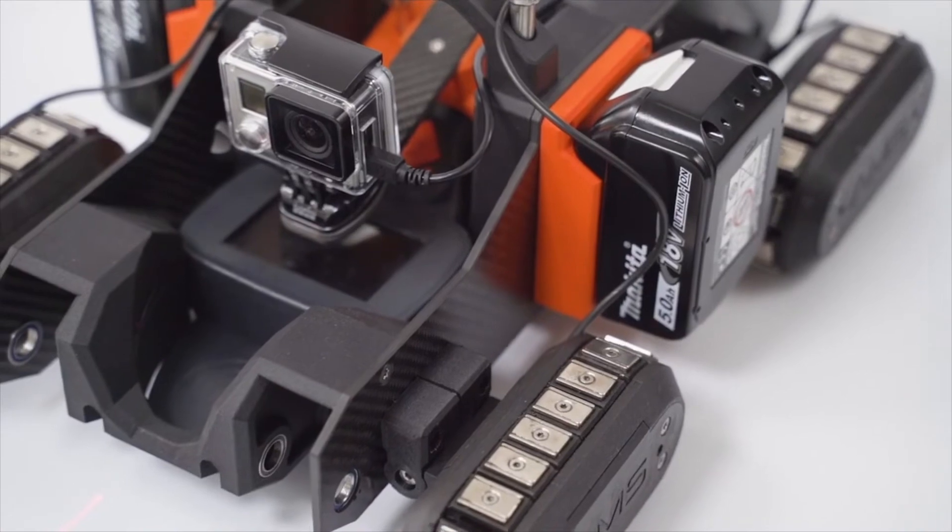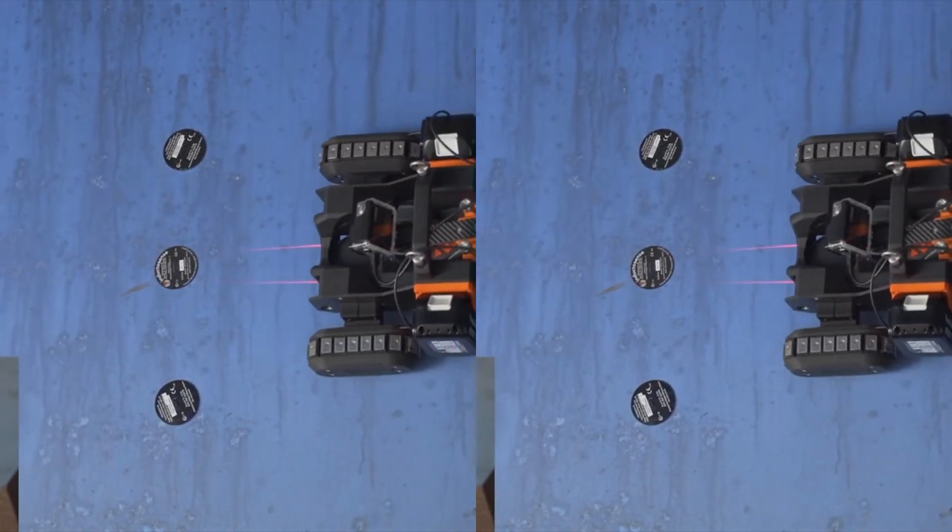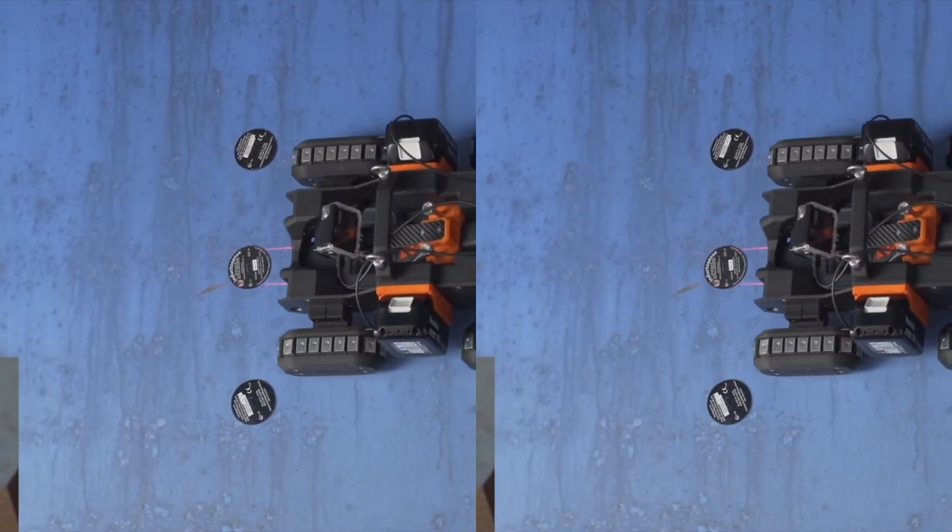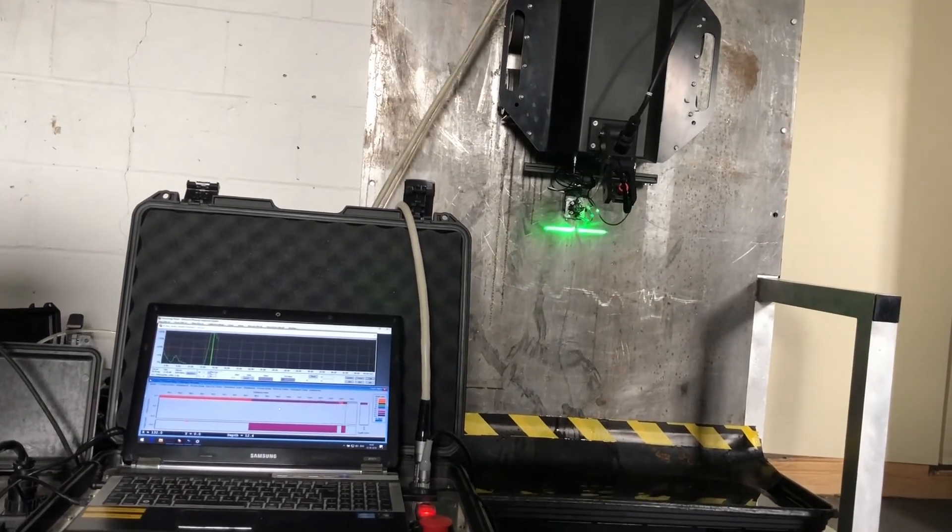Cameras will be added for observation and to facilitate driver assistance options. By adapting the existing control mechanism for the robots, we will be able to have one robot autonomously follow the other, maintaining a constant separation of at least 30 centimeters and greatly reducing the system's reliance on human control.